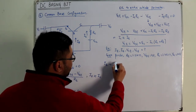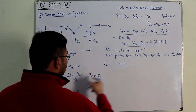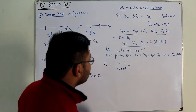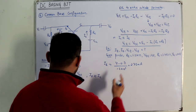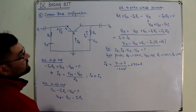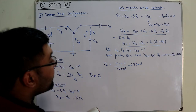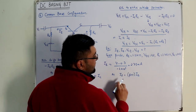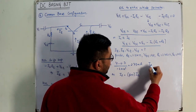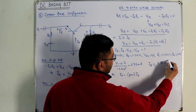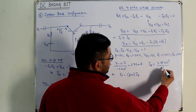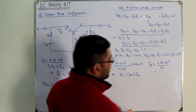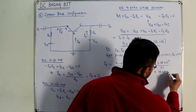Calculating IE: IE = (VEE − VBE) / RE = (4 − 0.7) / (1.2 × 10³), assuming a silicon transistor (VBE = 0.7 V). IE comes out to be 2.75 mA. For IB: since IE = (beta + 1) × IB, we get IB = 2.75 × 10⁻³ / (60 + 1) = 2.75 × 10⁻³ / 61 = 45.08 µA.